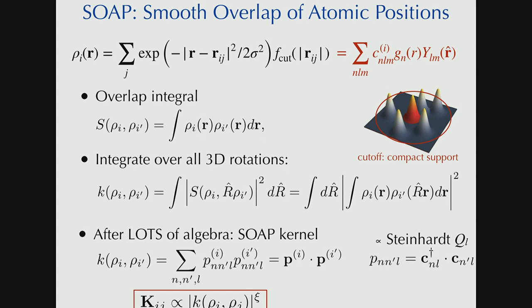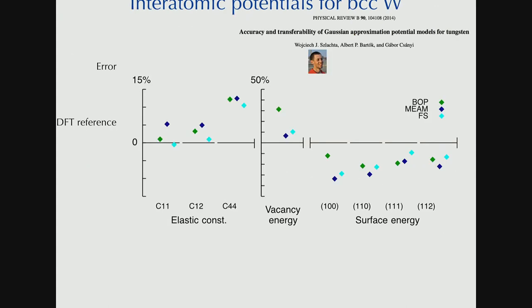The nice thing about this from a physicist's point of view is there are very few free parameters. So really, the cutoff function, the sigma, which is the smearing of the atoms, the cutoff, the smearing, and the small integer, which is typically 4, and that's it. So all of this, there is very few things to tune.